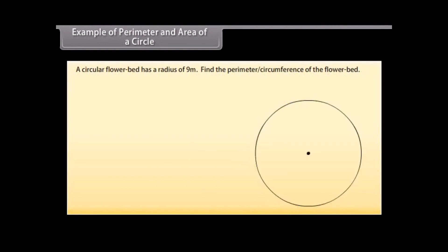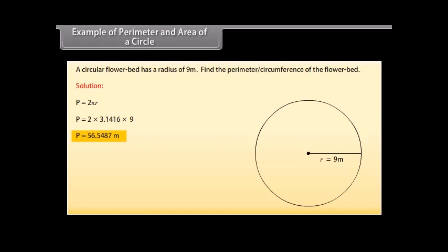Example 1: A circular flower bed has a radius of 9m. Find the perimeter or circumference of the flower bed. Solution: We know that perimeter P equals 2πR. Substituting the values, P equals 2 × 3.1416 × 9, which equals 56.5487m. So the perimeter or circumference of the flower bed is 56.5487m.